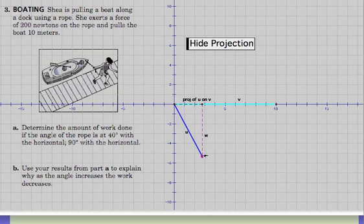At 90 degrees, none of her 200 newton force is being used to move the boat in this direction. The boat may be moving, but not in this direction. If she goes this way, then she's pulling the boat in this direction. I hope that makes sense.